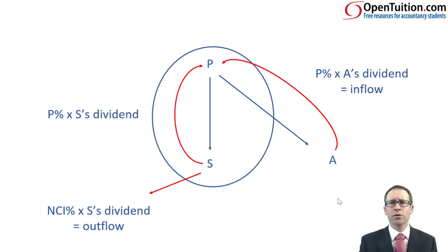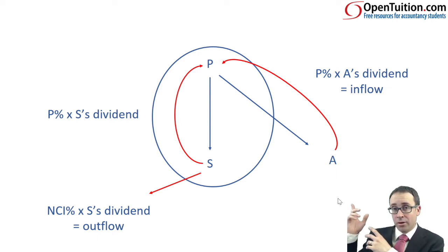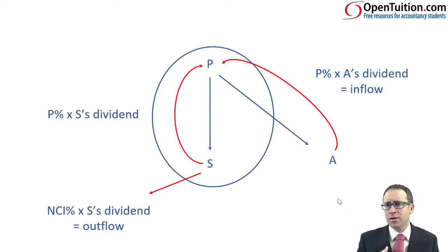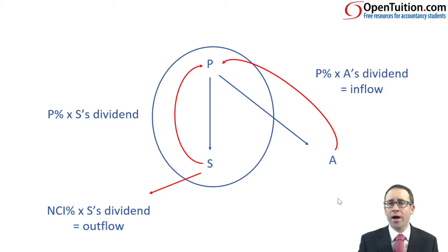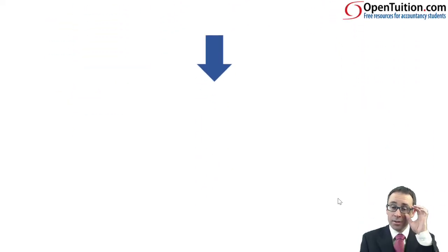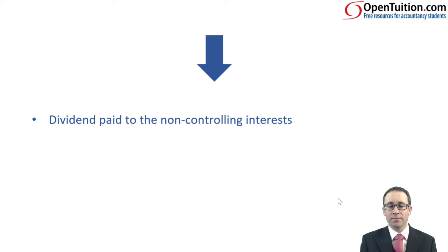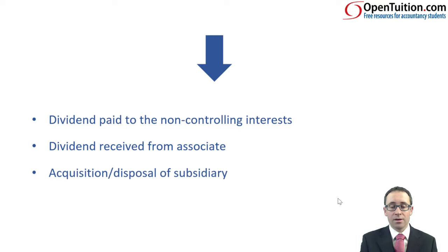Those are the two things to consider first. We'll then need to consider what happens when we look at acquiring or disposing of a subsidiary. If we bring in another subsidiary, there's going to be a big cash outflow as we acquire it. We also need to take account of all those balances acquired on acquisition. So the three main areas are: the dividend paid to the non-controlling interest, the dividend received from the associate, and the acquisition or disposal of a subsidiary. Then we go on to build it up by looking at a full-blown group statement of cash flows example.